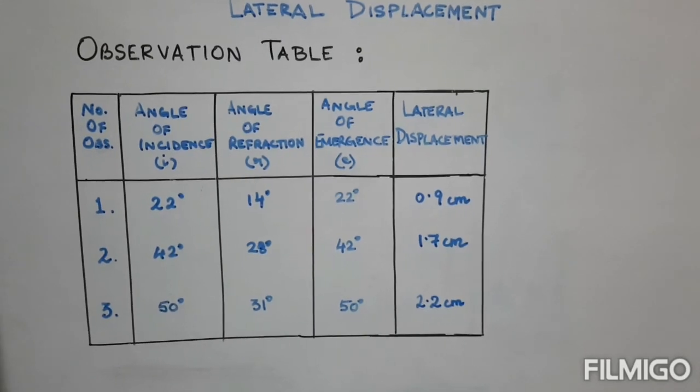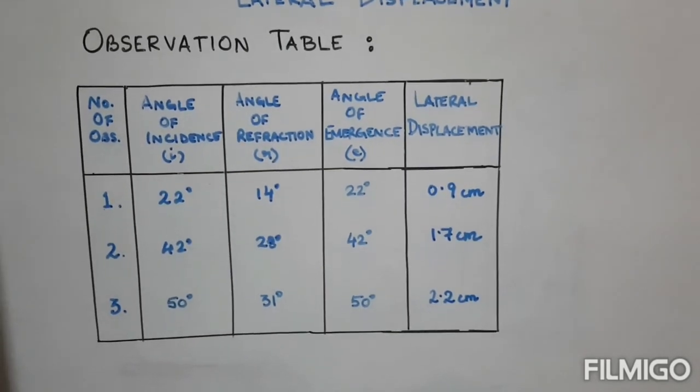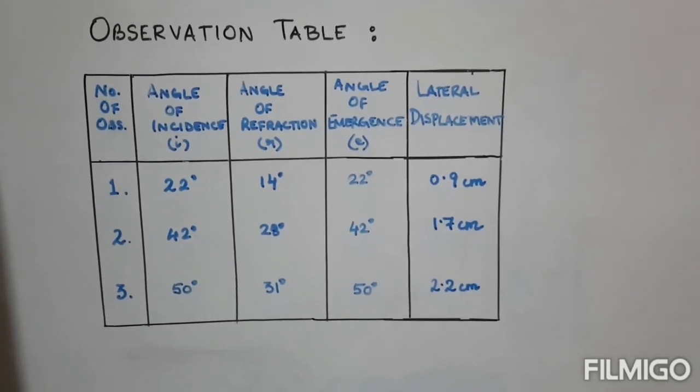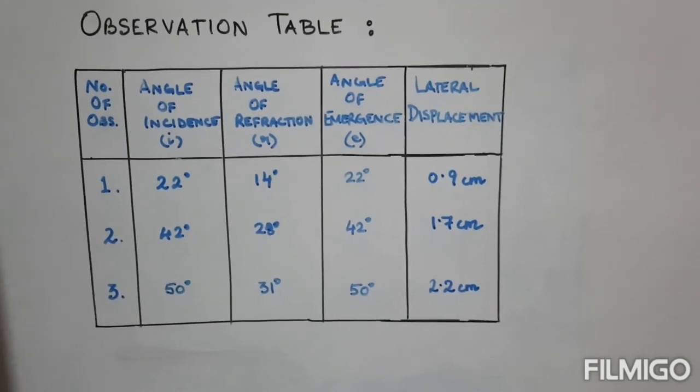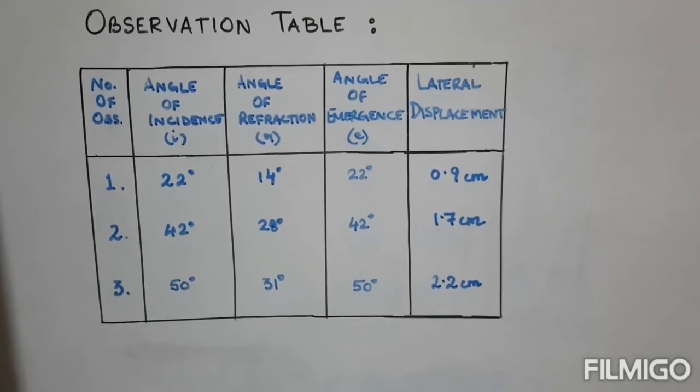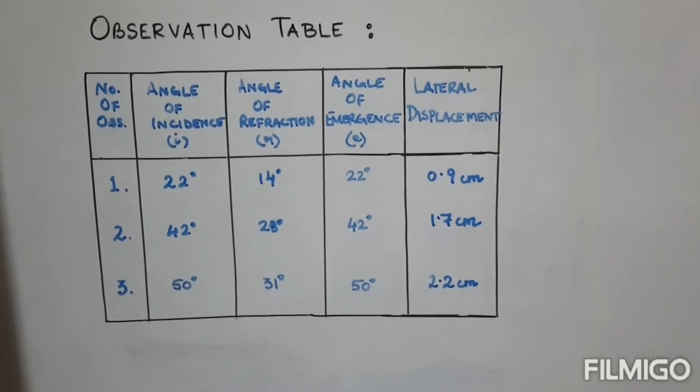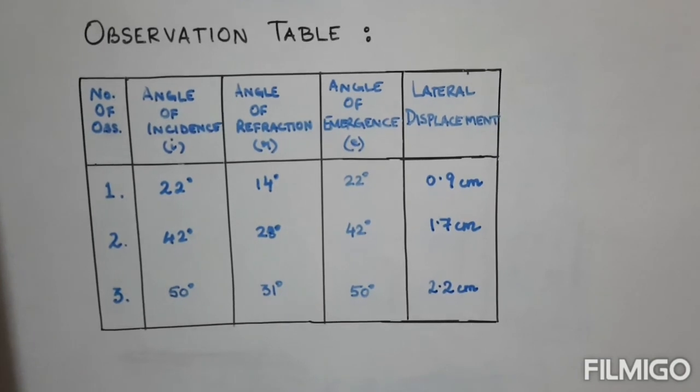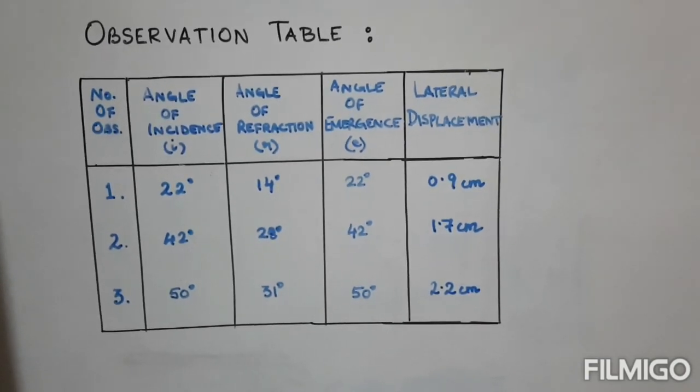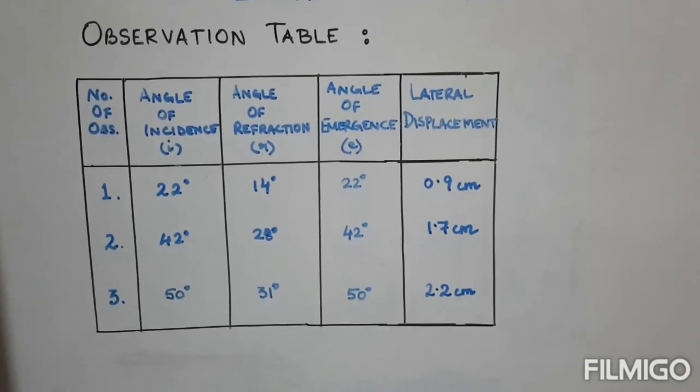Now all the data are written in this observation table. From the observation table it is very much clear that the angle of incidence is equal to the angle of emergence, and the lateral displacement is increasing with the angle of incidence.